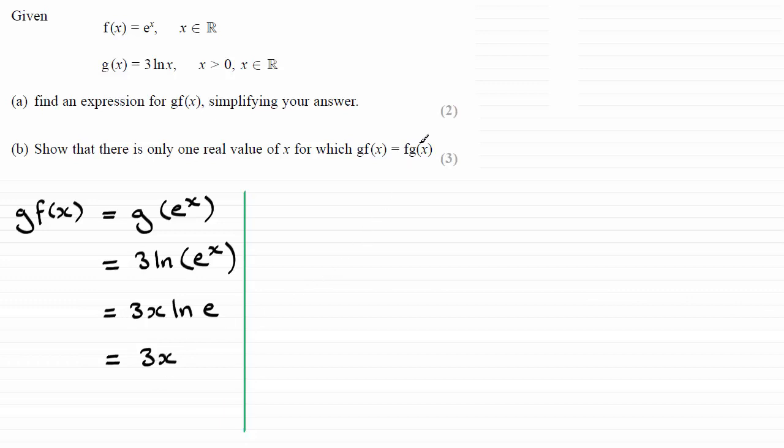We've now got to do a similar thing and work out fg of x. So if we start by doing that we've got fg of x, well that's going to be equal to f of whatever g of x was. We can see that g of x was 3 times the natural log of x.